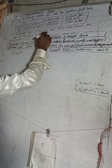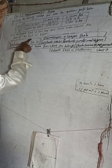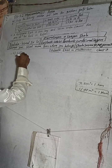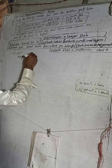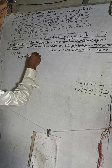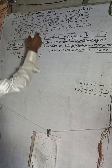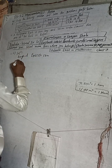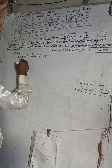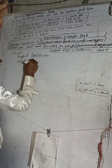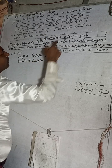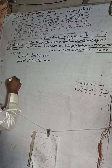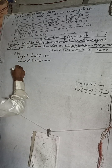Now we'll do this. A rectangle field is 50 meters long and 40 meters wide. Length L is equal to 50 meters, breadth is equal to 40 meters wide. Therefore, we find the area of the field.